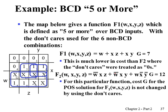Here is another example. We want to define a function f with 4 variables, where the function becomes 1 when the BCD input is 5 or more. Since BCD input is limited from 0 through 9, the remaining 6 values are unused. In the kmap, when input is 5, 6, 7, 8, or 9, the function becomes 1.